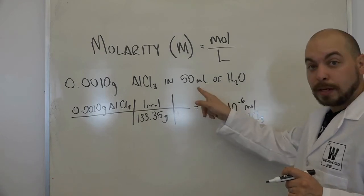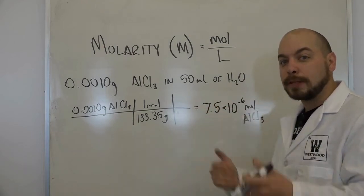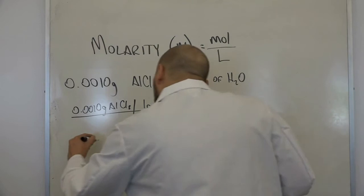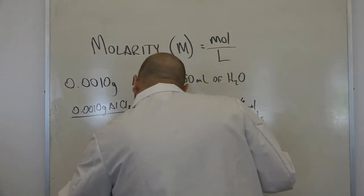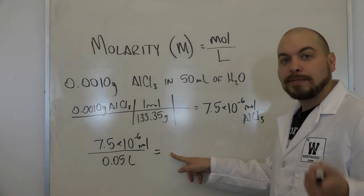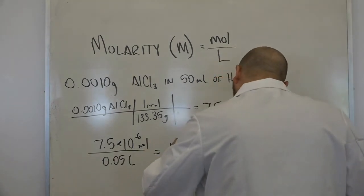Well, we need to divide by the number of liters. Remember, 50 milliliters is 0.05 liters. So we're going to divide this by 0.05. And that gives us an answer of 1.5 times 10 to the negative fourth moles per liter. So there's our answer.